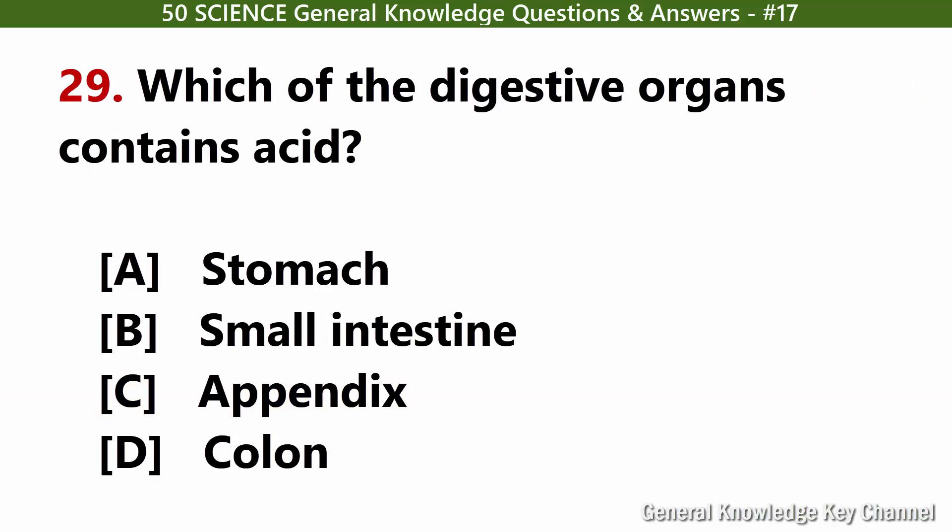Which of the digestive organs contains acid? Answer B: Small intestine.